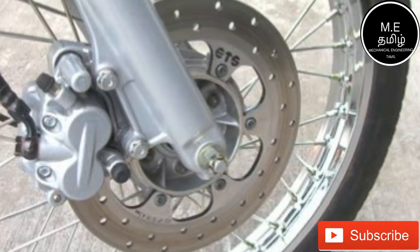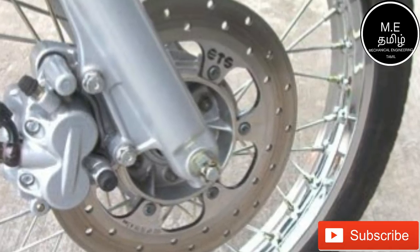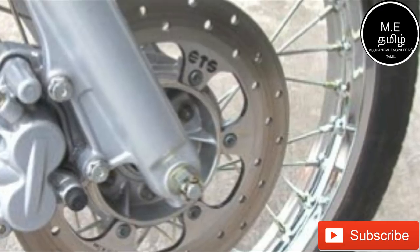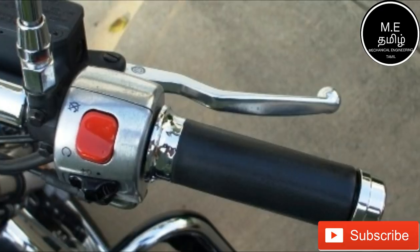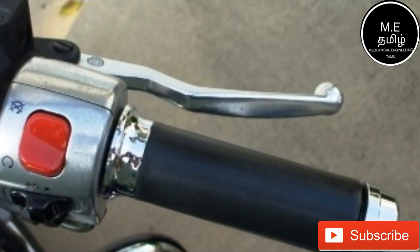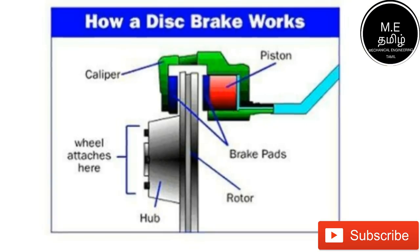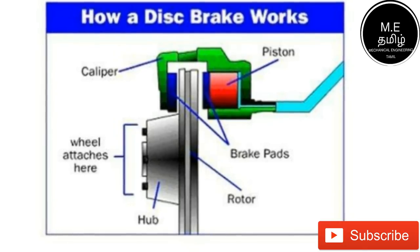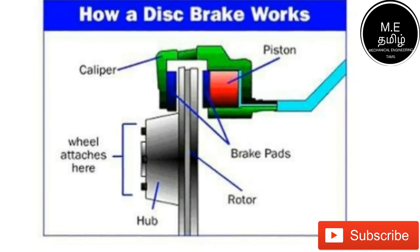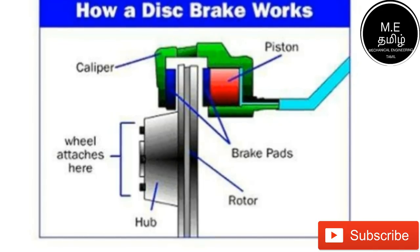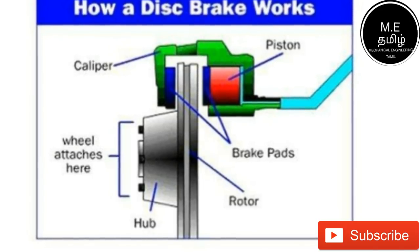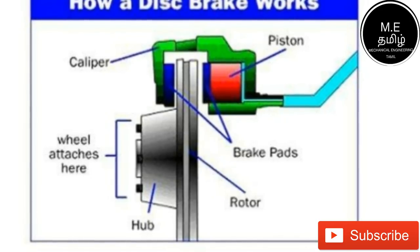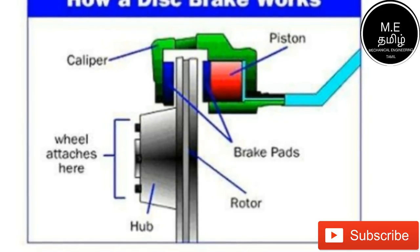The disc brake is on the wheel. You know what you have to do — the reason is that we have holes in the disc. The first reason is that the caliper presses the rotor and stops the wheel.